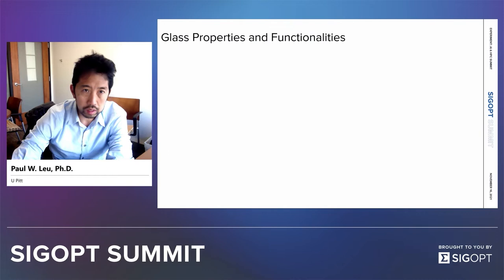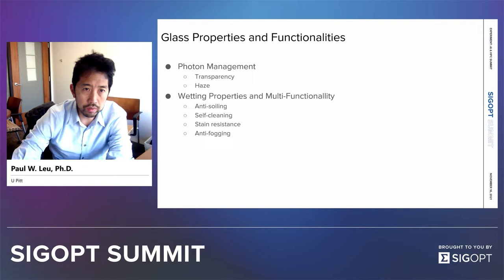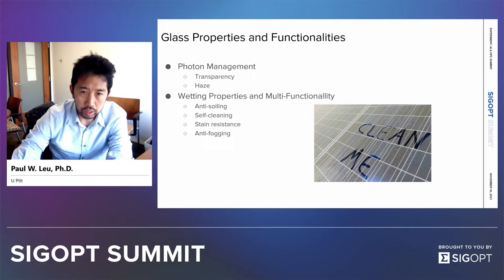Glass — the most important properties are related to how light goes through them. First of all, transparency: what fraction of photons go through the glass. There's also haze, which measures of the photons going through, how many go straight through and what fraction are scattered. And then there's a whole bunch of different functionalities related to glass, things such as anti-soiling, self-cleaning, stain resistance, and anti-fogging, important for making sure your glass functions in a variety of environments so that light can go through, into, or out of your device.